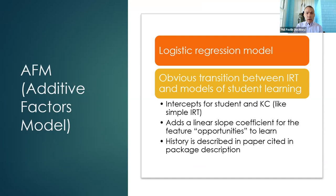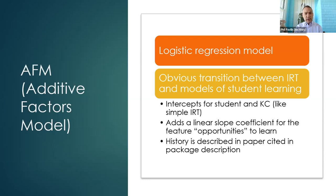The AFM linear slope tracks the number of prior opportunities that the student has had for learning that particular knowledge component. The paper describing all this history is the LKT paper published in IEEE Transactions on Learning Technologies. This model is relatively simple — just a regression with a predictor for the student, a predictor for the knowledge component, and a predictor for the number of prior opportunities.